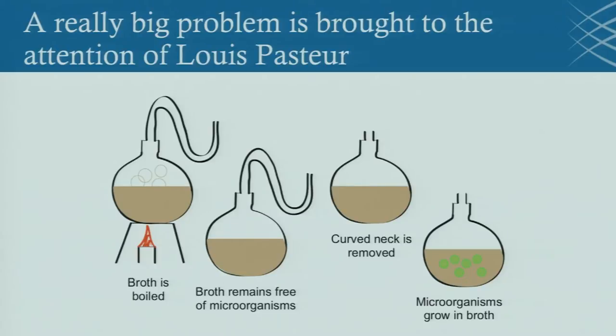What Pasteur realized was that bacteria from the environment were actually causing this problem. The clever experiment he did is laid out here: he took wine, put it in a special glass flask with a curved neck, and boiled the wine just briefly, not enough to get rid of all the alcohol. When he kept the curved neck on, which prevented stuff from the environment from entering, the wine remained clear for months. If he removed the curved neck, microorganisms would grow within the broth rapidly, demonstrating that bacteria were the source of the problem and pushing forward the idea of germ theory.